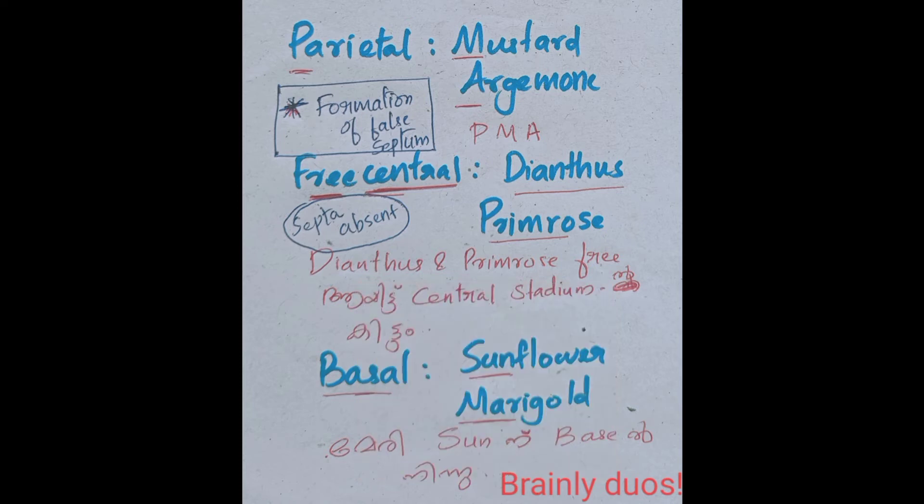The processing for dianthus or primrose. Free central placentation, dianthus primrose. The code is dianthus primrose, free is central stadium. We can use dianthus primrose, free is central stadium. Free central. That is free central placentation.